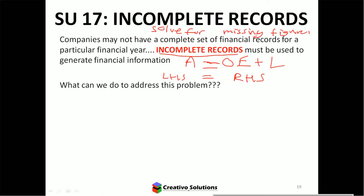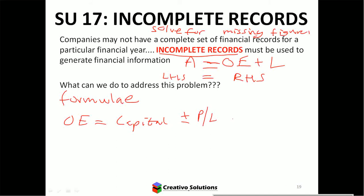So what can we do to address this problem? We need to use the accounting equation or we need to use formulas. One formula is A equals OE plus L. Another formula is OE equals capital plus or minus profit or loss minus drawings. These are equations you've written in your book before.